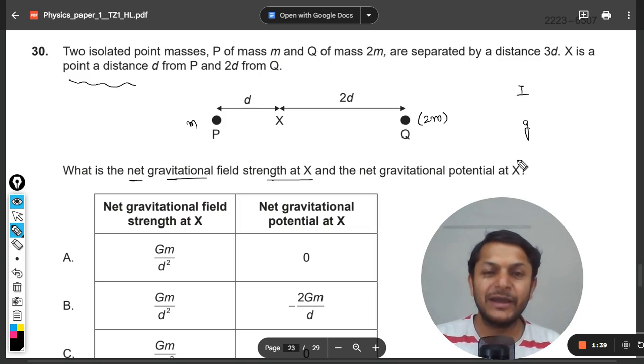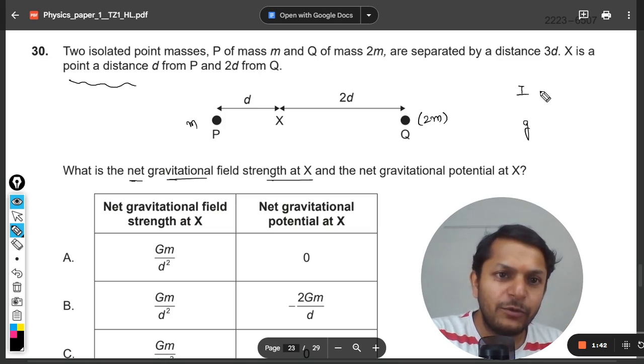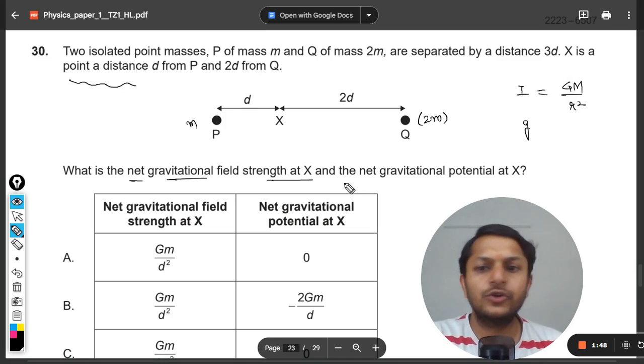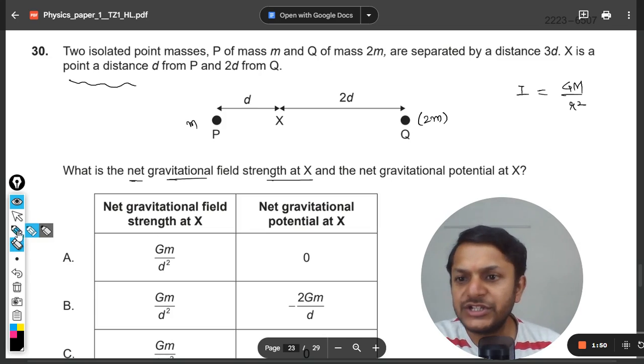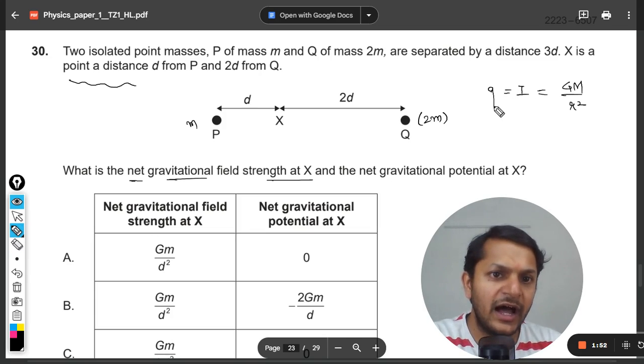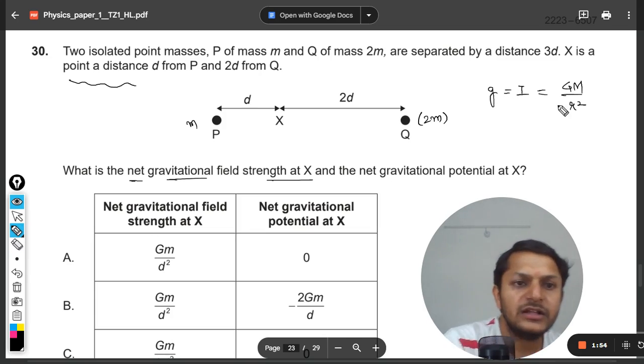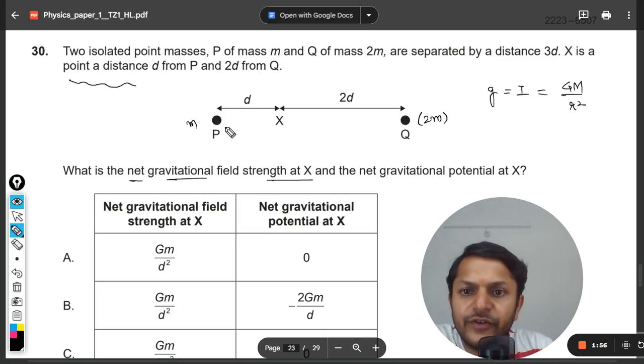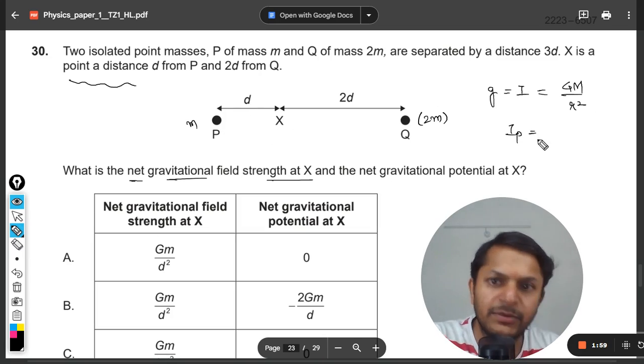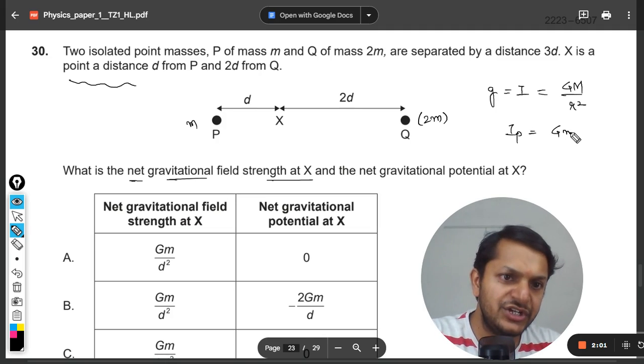The formula for the intensity is capital G m divided by r square. So you can call it small g or you can call it I. It's the same thing: Gm by r square. First of all, we are going to find what is the gravitational field intensity by P. So that will be G times m divided by d square.